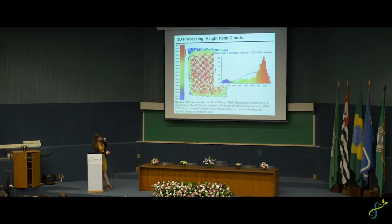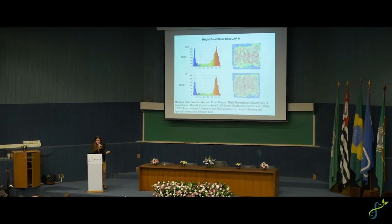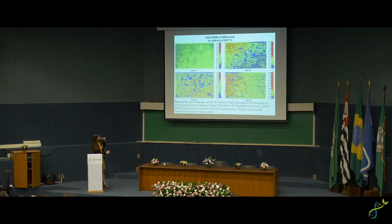The point cloud provides a flattened height measurement across a given plot of soybeans, showing variability in height within a plot. Comparing two different plots, they may have similar distributions of variability, but the overall height is very different. We're looking at change in height from day 27 to later days after planting across the field.